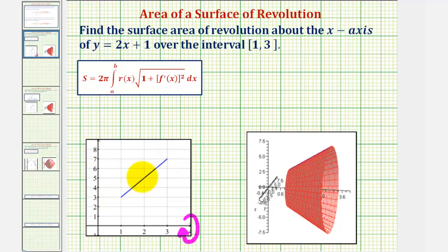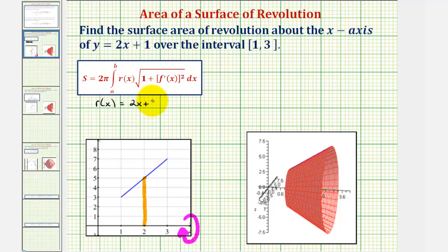So if we pick any point on our linear function, notice how this length here would be r of x, which is the function value of two x plus one. So we know r of x equals two x plus one, and f of x is also two x plus one. So if f of x equals two x plus one, notice how f prime of x would just be two.